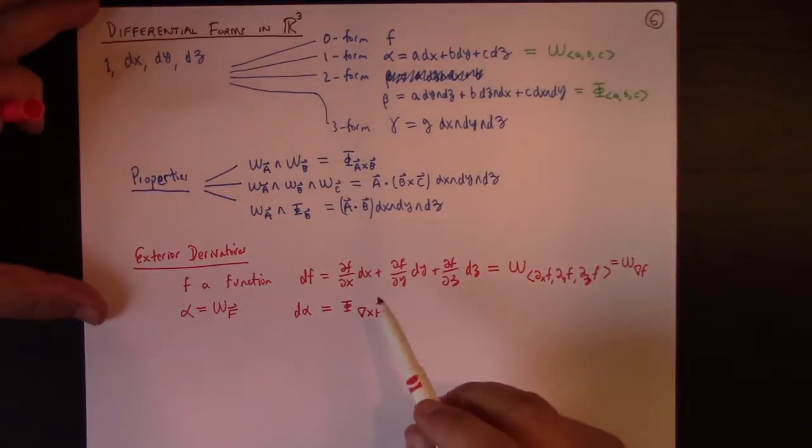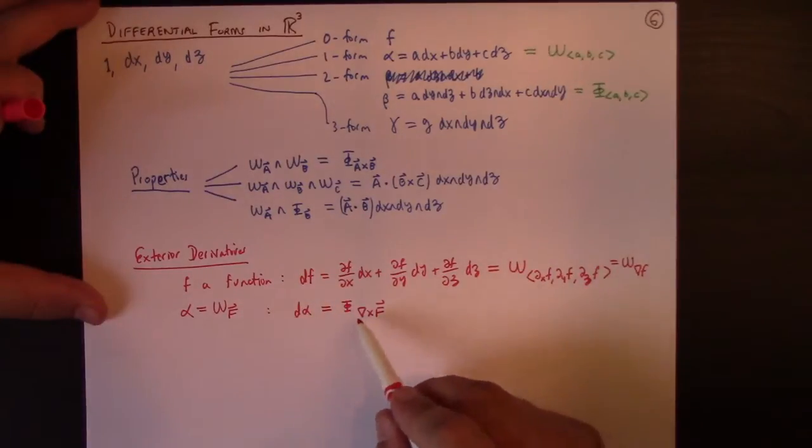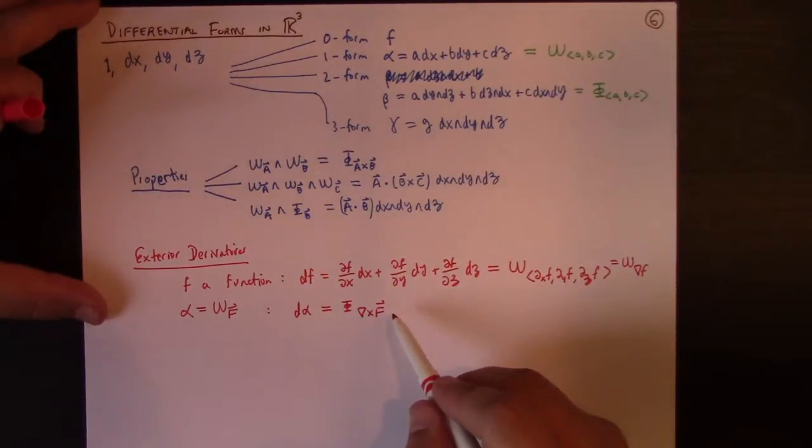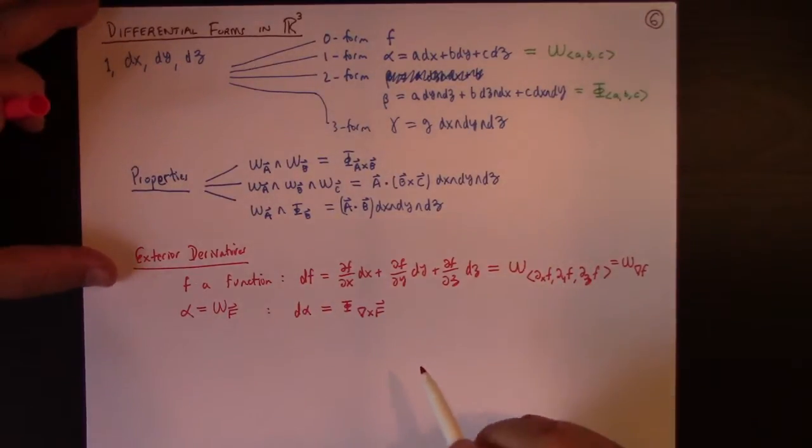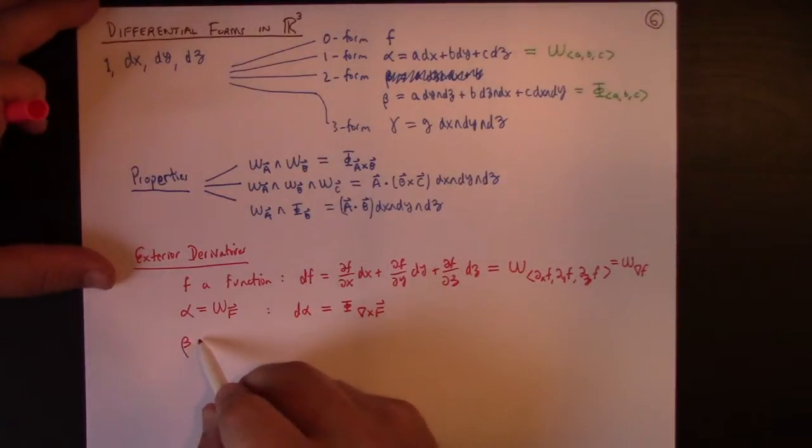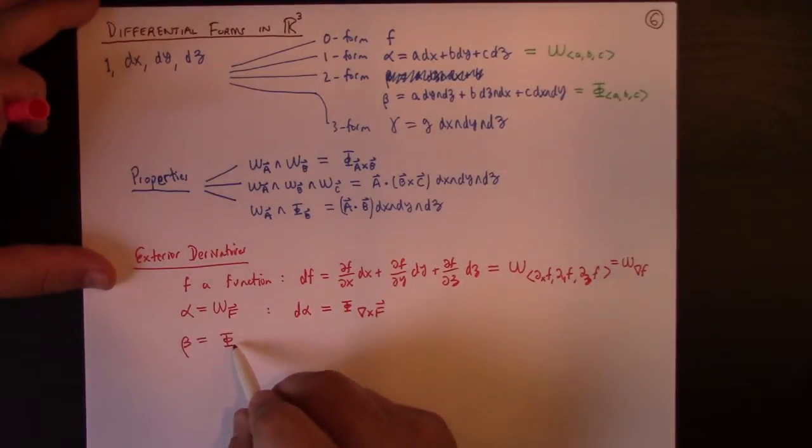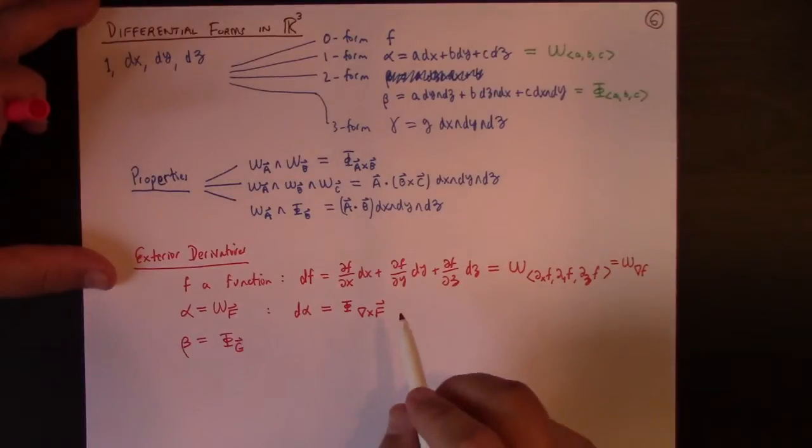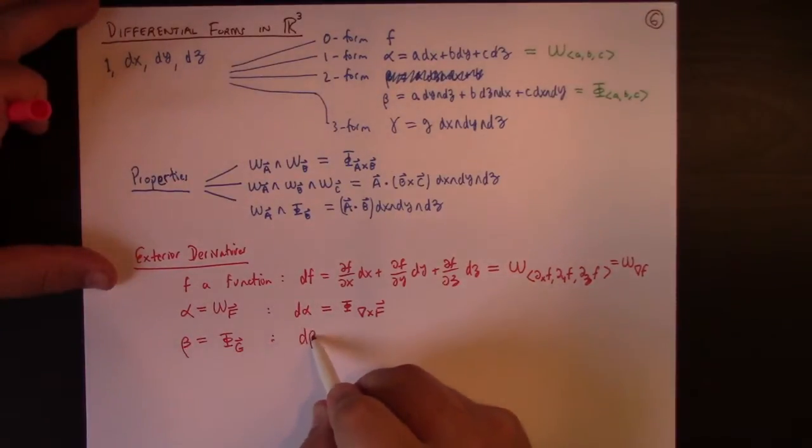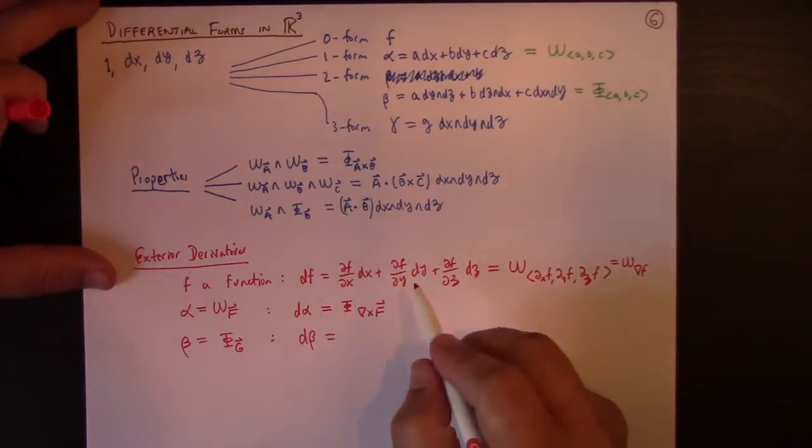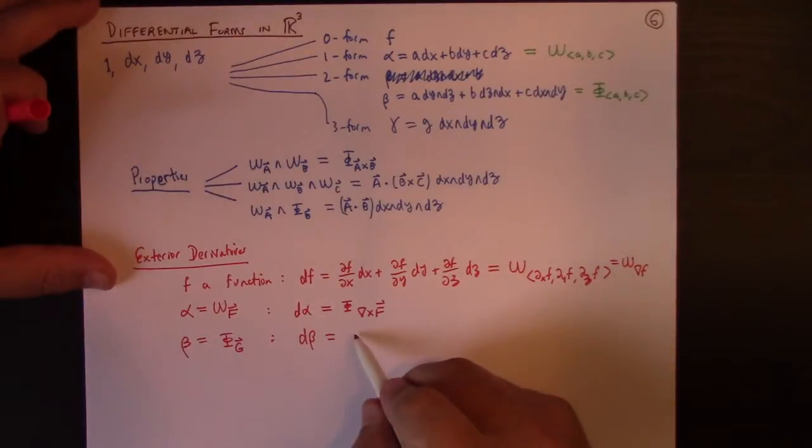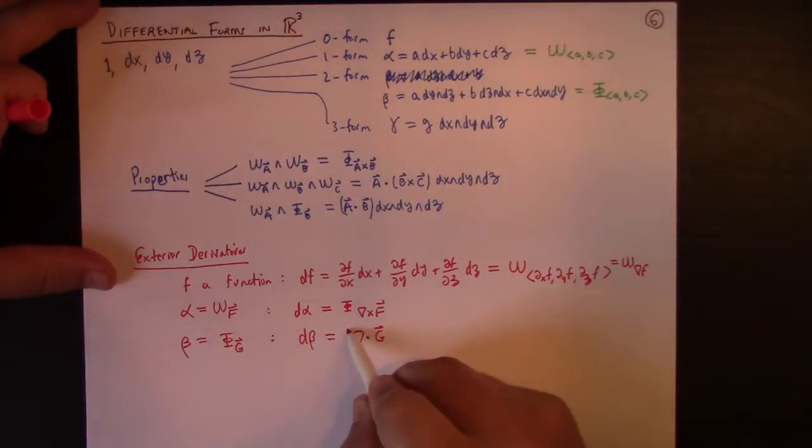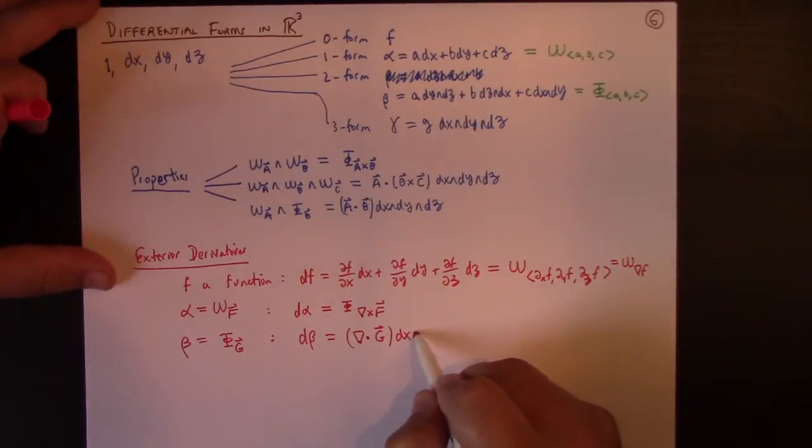So, that's very neat. The exterior derivative of a one form gives us a two form, and that two form corresponds to the curl of the corresponding vector field. For a two form, let's say beta corresponding to g, dbeta, well, that's got to be a three form, so you need a scalar function in front. What scalar function is it? It's exactly the divergence of g. Divergence of g dx wedge dy wedge dz.